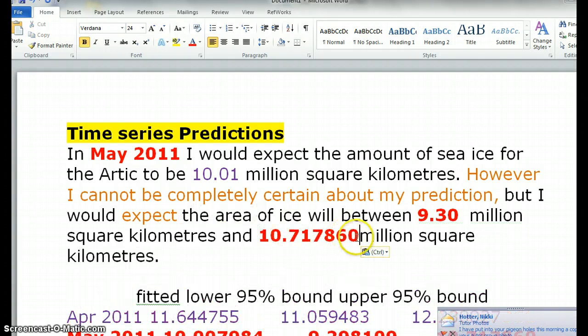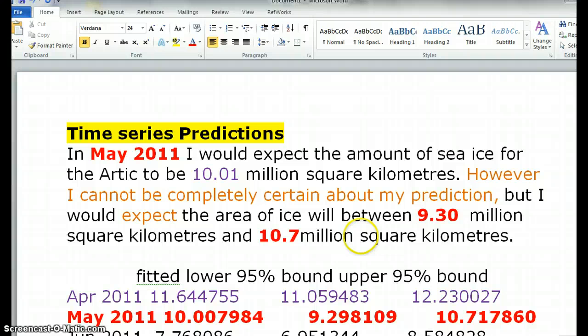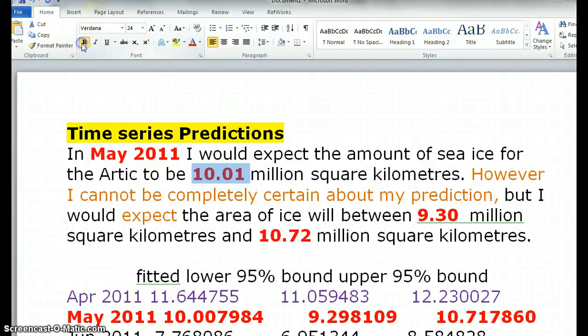And again, I need to round that, and that's going to be 10.72. Now, what I need to make sure—I haven't made a mistake—that the 10.01, which I should have put in red and bold, is between 9.3 and 10.7. Just as a double check.